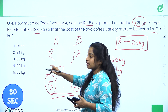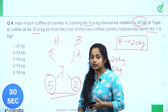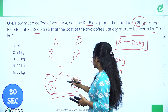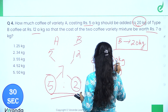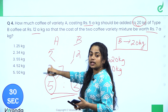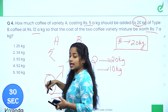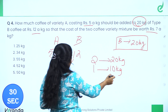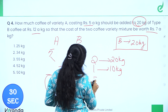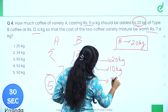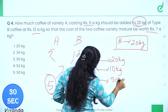B is 2 units. Since we have 20 kg of B, 1 unit equals 10 kg. A is 5 units, so A equals 50 kg.